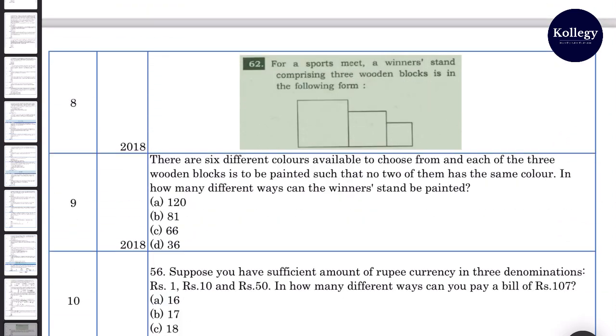Question number 8. For a sports meet a winner's stand comprising 3 wooden blocks is in the following form. There are 6 different colors available to choose from and each of the 3 wooden blocks is to be painted such that no 2 of them has same color. In how many different ways the winner stand can be painted? 6 colors and we have to choose 3 stands. The sequence matters so permutations not combinations. 6P3 that will come out to be 6 factorial divided by 3 factorial, 6 into 5 into 4, 120.